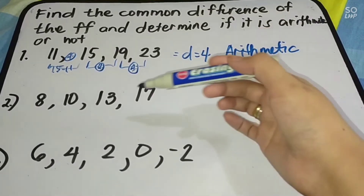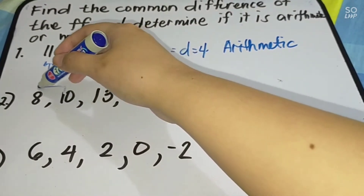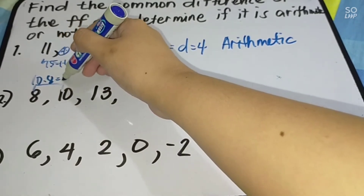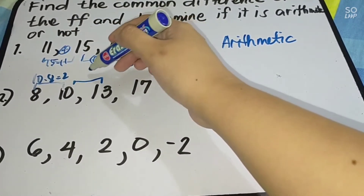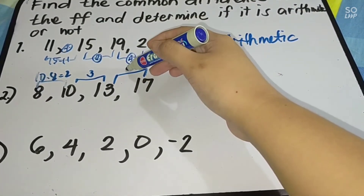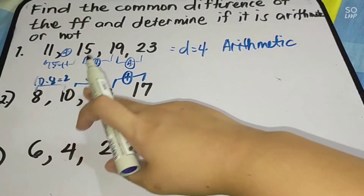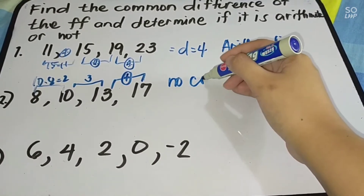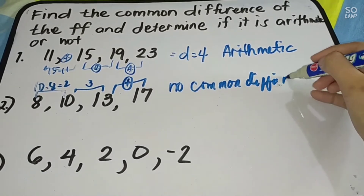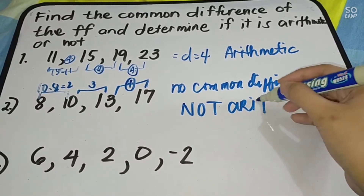Number 2: We have 8, 10, 13, and 17. Let us find if there is a common difference. 10 minus 8 = 2; 13 minus 10 = 3; 17 minus 13 = 4. As you can see, the differences are 2, 3, 4 — they are not the same. Therefore, we have no common difference, and this is not an arithmetic sequence.